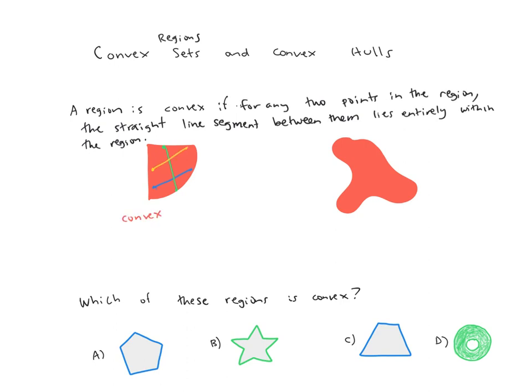However, the region on the right is not convex. For some pairs of points, the line between them lies entirely within the region. But for other pairs of points, the line segment between them pops out of the region.